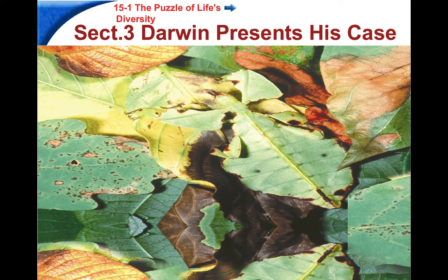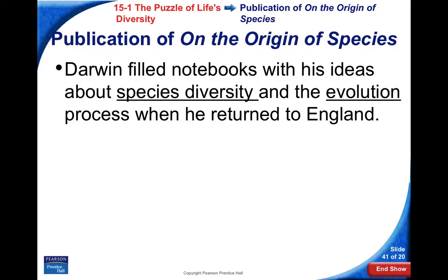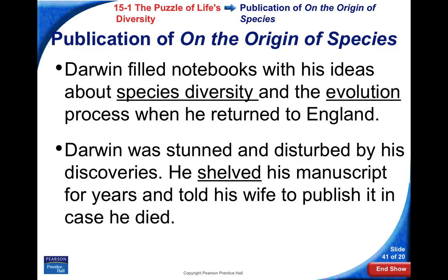Section 3 is all about Charles Darwin presenting his idea of natural selection. Charles Darwin was on the HMS Beagle traveling around the world. He collected a lot of fossils and specimens, took a lot of notes about species diversity, came up with his idea of evolution, and decided to write it down when he got back to England.